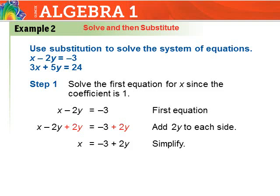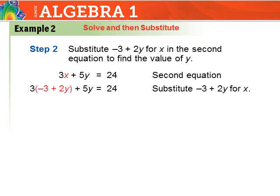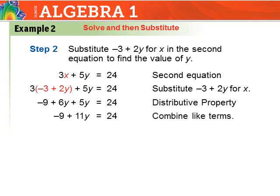Now in step two, I substitute negative 3 plus 2y in place of x in the second equation. So 3 times the quantity negative 3 plus 2y, plus 5y, equals 24. Expanding: 3 times negative 3 is negative 9, and 3 times 2y is positive 6y, giving negative 9 plus 6y plus 5y equals 24.